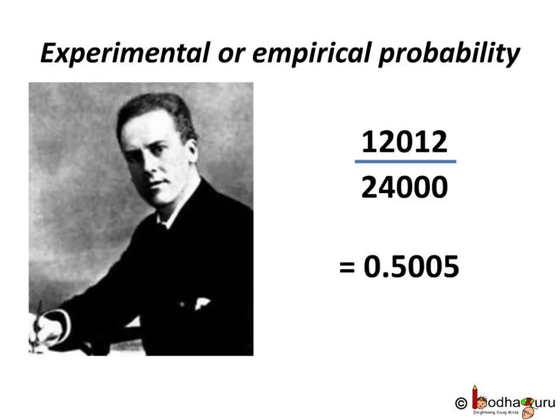Now we cannot spend that kind of time tossing coins, right? But his finding tells us that the probability of getting head will come closer and closer to 1/2, that is 0.5, if the number of observations increases because head is one of the two sides of the coin, either head or tail.